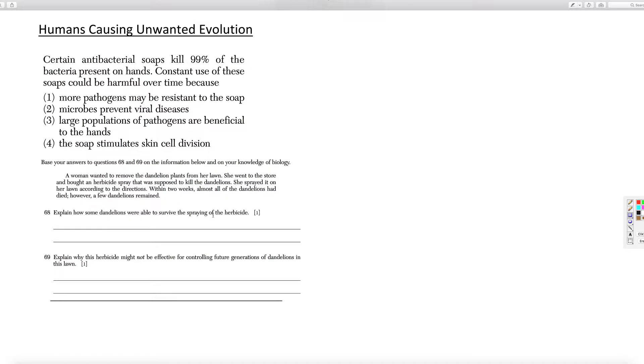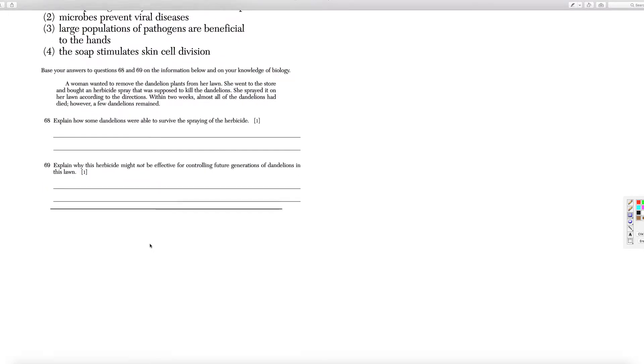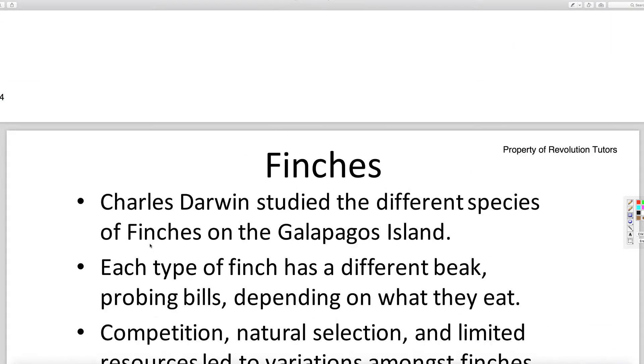Explain how dandelions were able to survive the spraying. They must have had a gene or something that let them be resistant. And why would it not be effective? Because now, their future ones are all resistant.